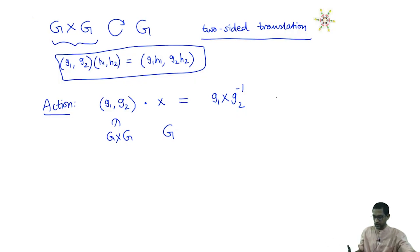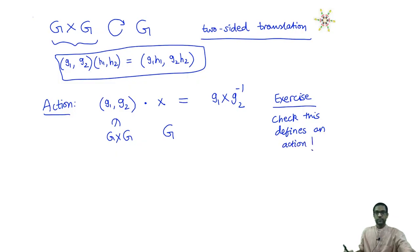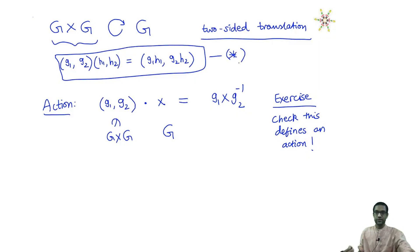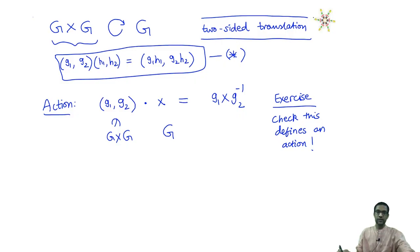This is the two-sided translation. There is a little exercise which I urge you to do: check that this defines an action. This involves looking at what the definition of the product on the cross product is. It is a nice exercise that puts together everything you have learned — cross products, definitions of actions, and so on. So rather than just right and left translation, you should think of them together as giving an action of G×G on G by means of this two-sided action.